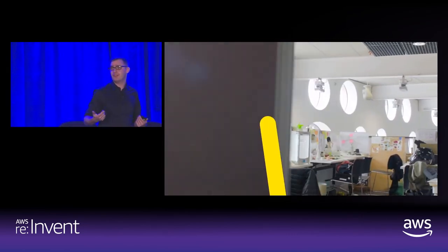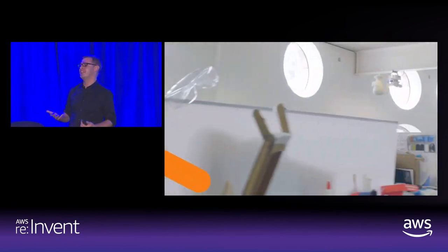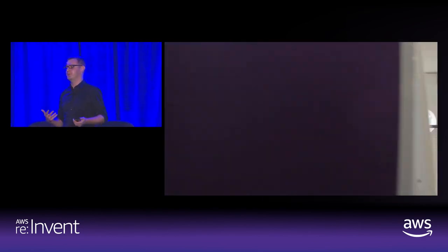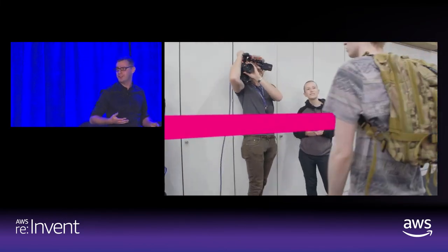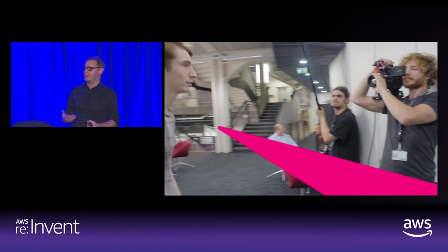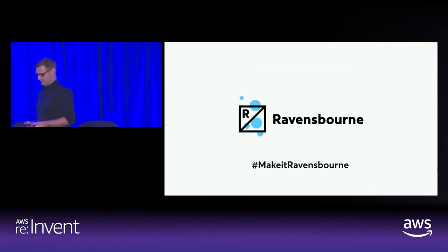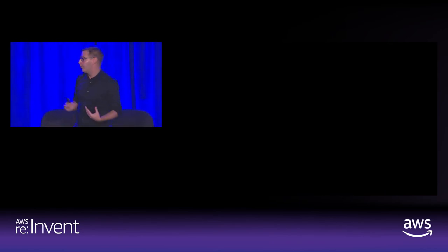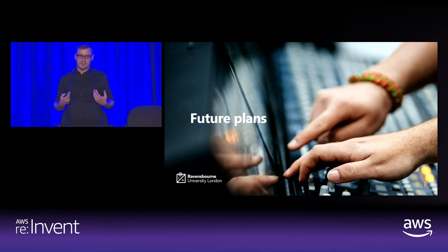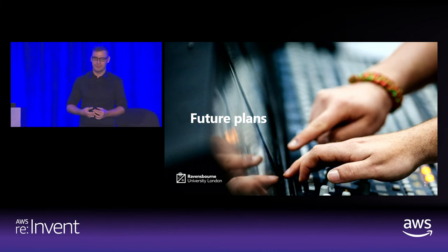In the engineering department, students on digital television technology do a live outside broadcast. We've recently moved over to cellular bonding for this, but it used to be a fibre link back to the building as well.